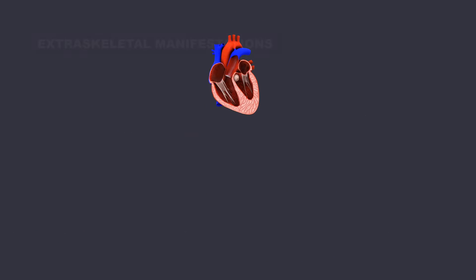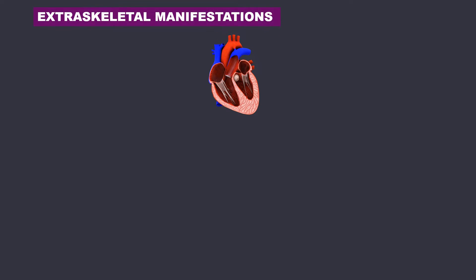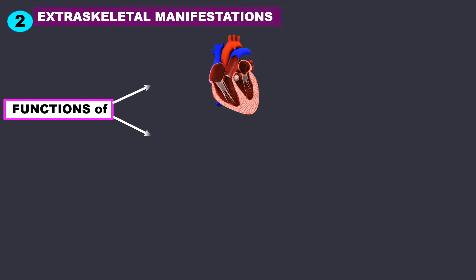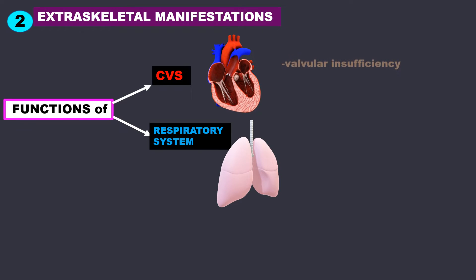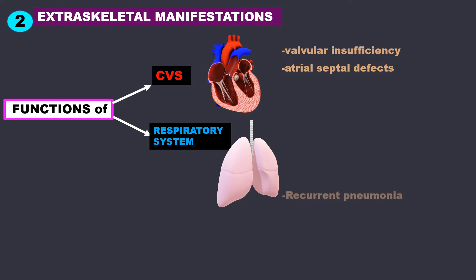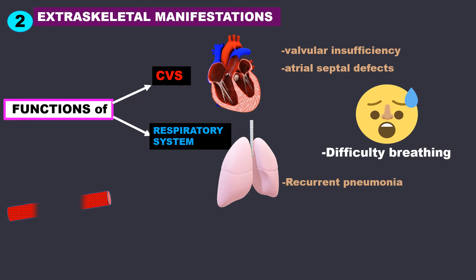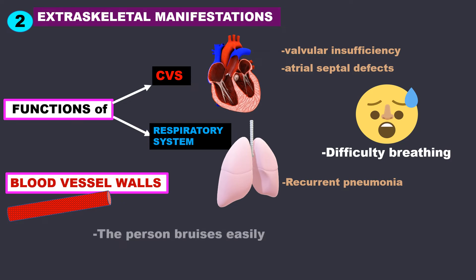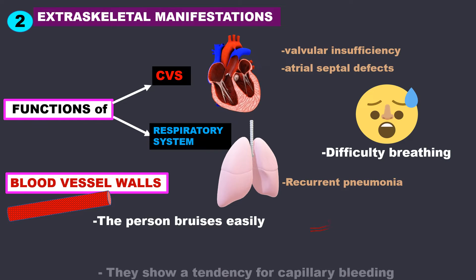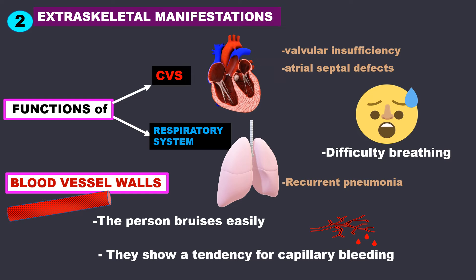There are also extraskeletal manifestations not involving the bone. The cardiovascular and respiratory systems may be affected; for example, there may be valvular insufficiency, atrial septal defects, and recurrent pneumonia, all seen clinically as difficulty in breathing. Collagen defects in blood vessel walls cause the person to bruise easily, and they may show a tendency for capillary bleeding.